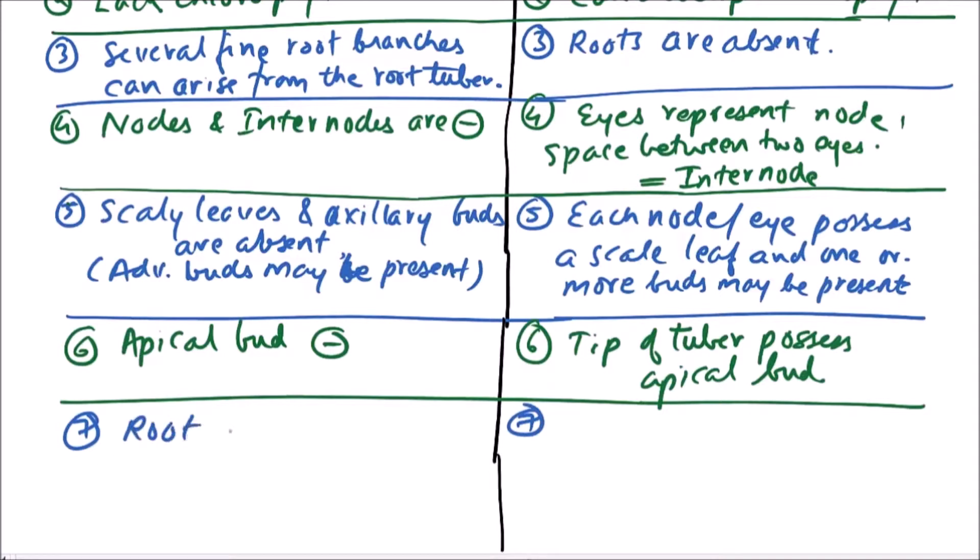The root tuber has root-like internal anatomy, while the stem tuber has stem-like internal anatomy.